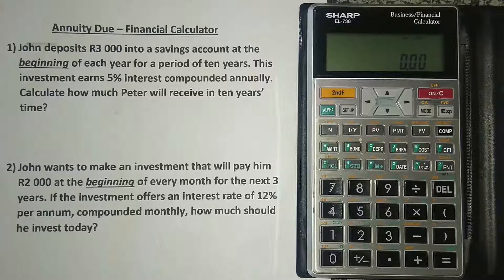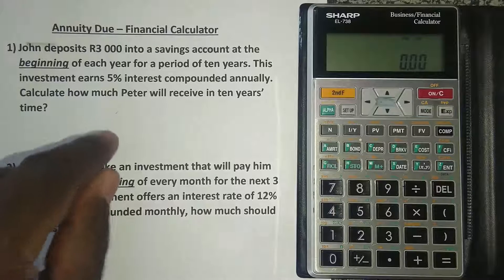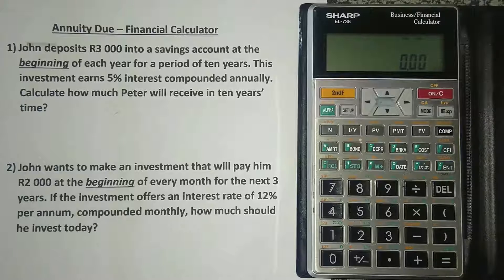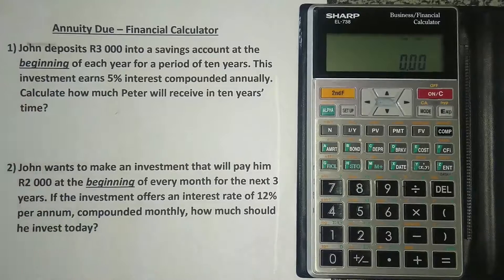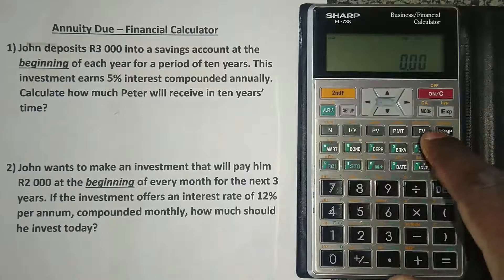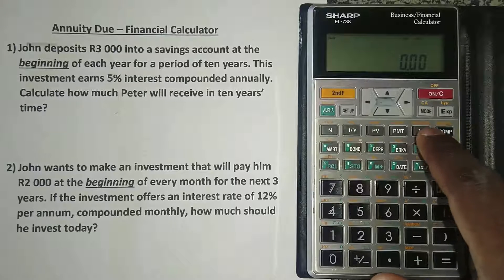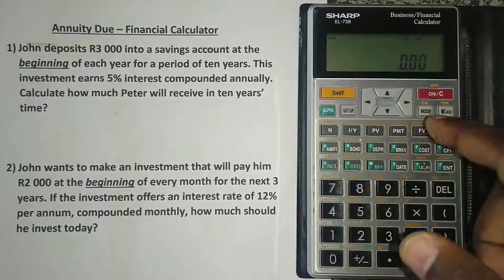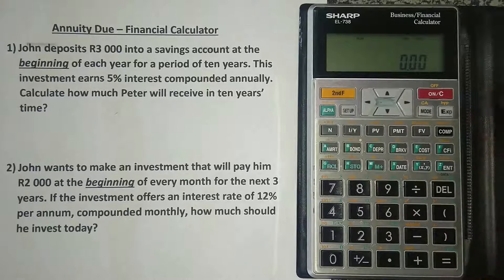We've done lessons using the same financial calculator but for ordinary annuity — you can check those out via the links in the description below. Now, how do we do annuity due on the financial calculator? Your financial calculator by default is ordinary annuity, meaning it's in end mode. So you have to put it to begin mode for payments that occur at the beginning of the period. Press second function and then FV.